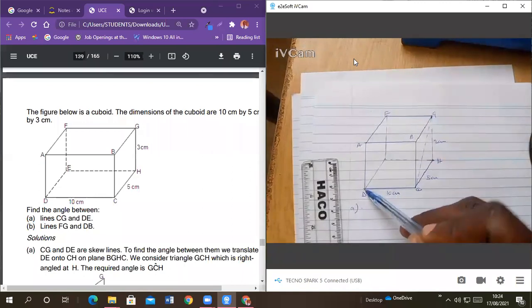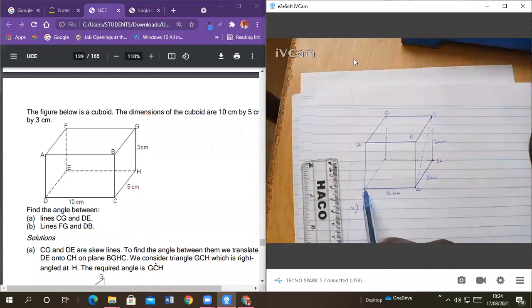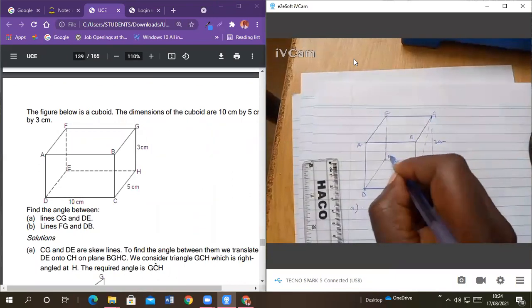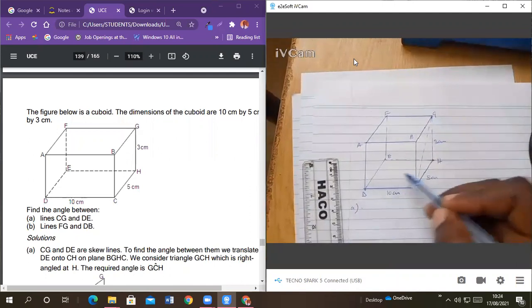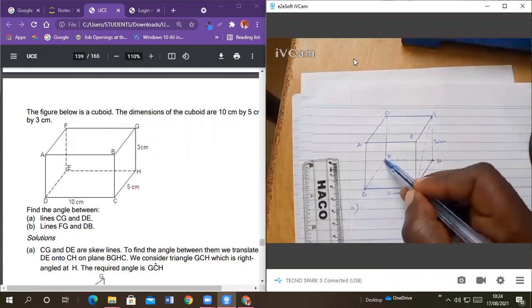Where's D? D's here. And E? Where's E? E's here. And E is there. So the angle between this and that.